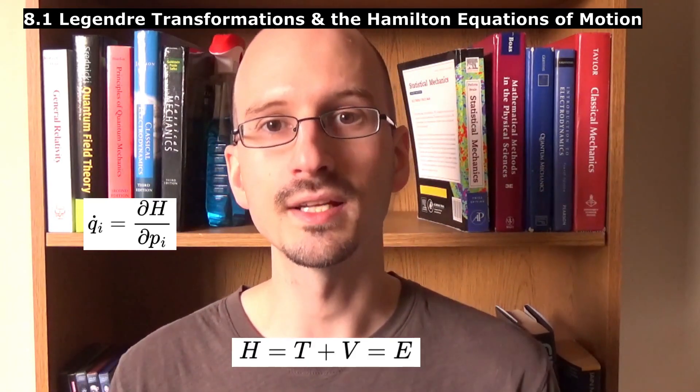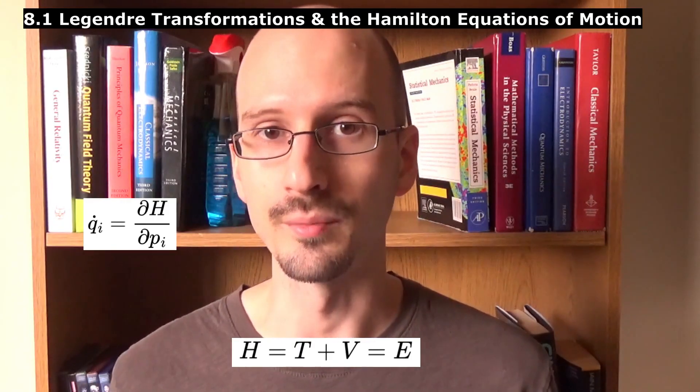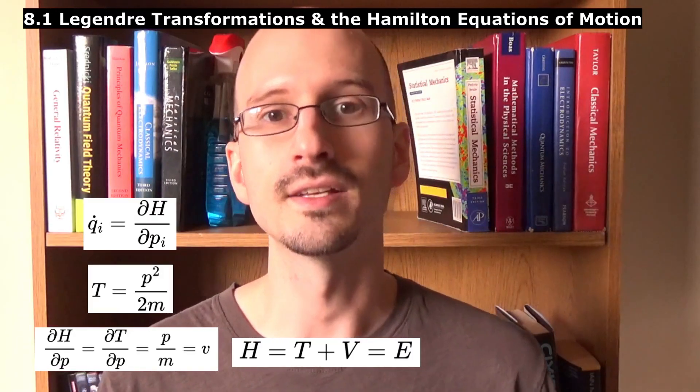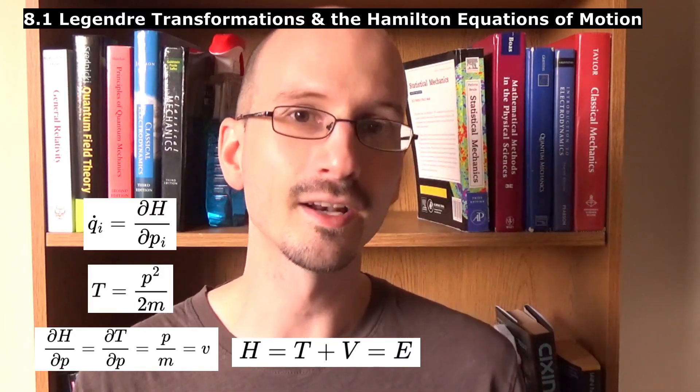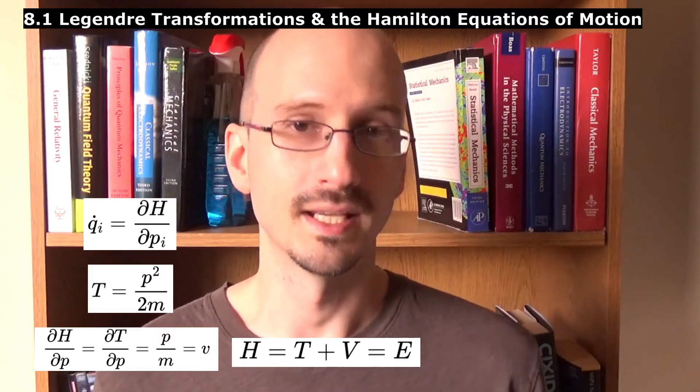The Hamiltonian is equal to kinetic energy plus potential energy, and the potential energy does not depend on the momentum. So the velocity is the derivative of the kinetic energy with respect to momentum, which if we do the math, it is.